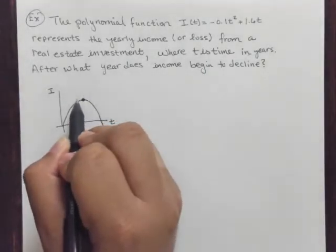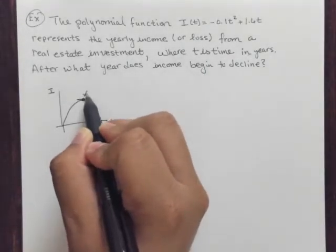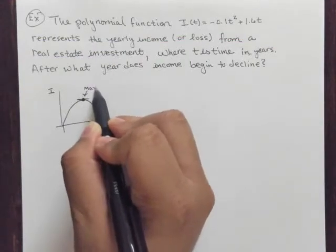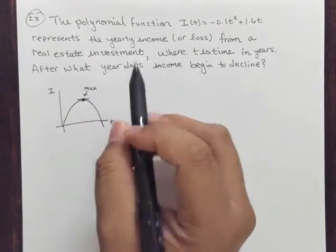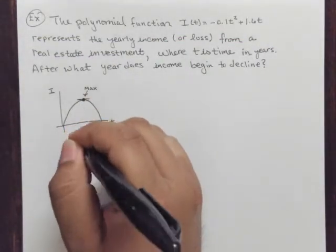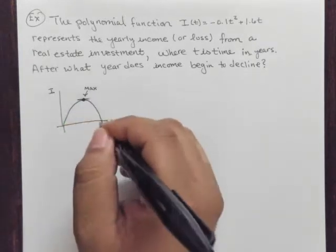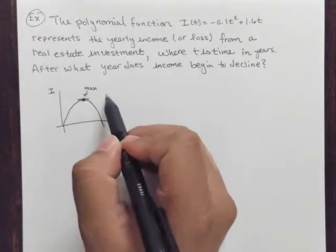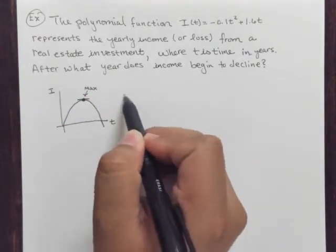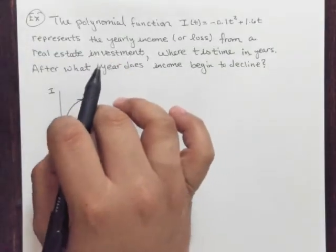Our question is: what is this value? And what it is, conceptually, is a maximum. This parabola is oriented downward, so it has a maximum. If it was oriented upward, it would have a minimum, but this is a different scenario here.